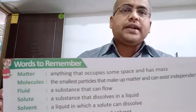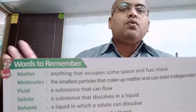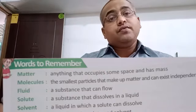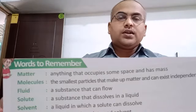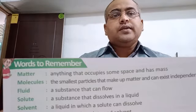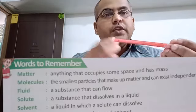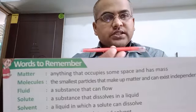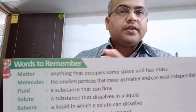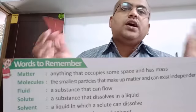Next is fluid. A substance that can flow is called a fluid — like water, milk, and several other things. Suppose this pen is made up of plastic; if we heat it, it will melt and start flowing, so it will become a fluid because it can flow. Anything that can flow is a fluid.